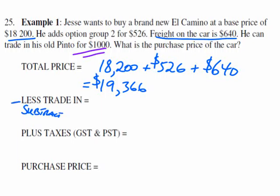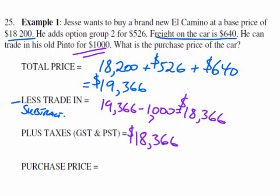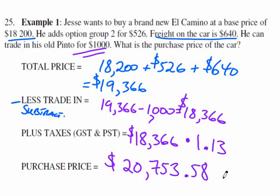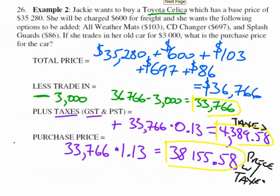And they say, tell you what, we'll give you $1,000 for your car. So it's going to be $19,366 less $1,000. So that's how much they say they want from you, but of course you've got to do the PST and taxes. So add the taxes. Now the easiest way to add taxes is to multiply by 1.13. And of course what that gives you is $20,753.58 total. So that's how I calculate the taxes.